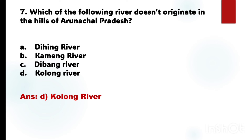The other rivers originate from Arunachal Pradesh. Question number 8: Nabograha Temple is located in which hill? The options are given, and the correct answer is Option D: Chitrashal Hill (Citrasol Pahar).